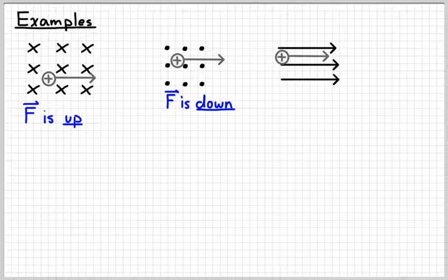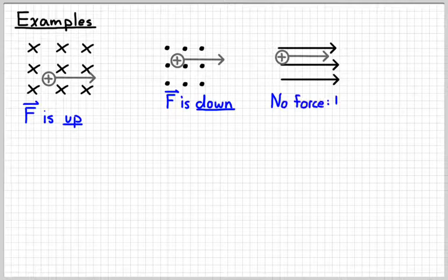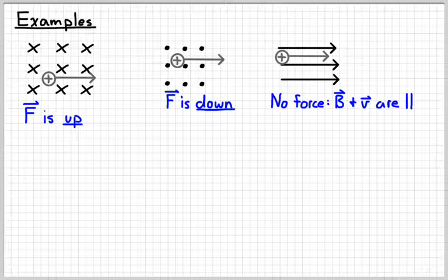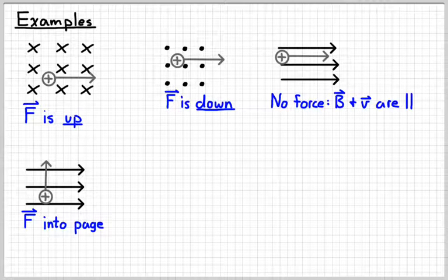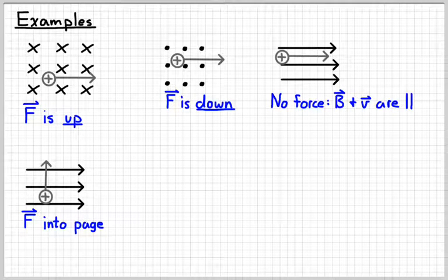In this example, we've got a magnetic field going to the right and a charge also moving to the right. Now before you go trying to point both your thumb and your index finger in the same direction, remember that if they are parallel to each other, there's no force. So in this situation, there wouldn't be a force. In the next situation, we have a magnetic field going to the right and the velocity going upwards. Point your thumb up, index finger to the right — your middle finger should point into the page, so it would look like that.